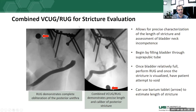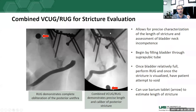The combined study images demonstrate: first the initial retrograde urethrogram showing obliteration of the urethra, then the combined VCUG and retrograde urethrogram showing exactly how long and to what extent the urethra is strictured. A barium tablet provides a reference point for size measurement. This gives surgeons excellent information when planning their procedure.